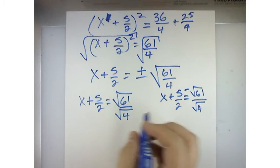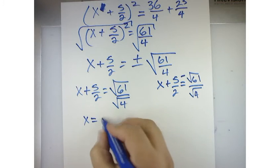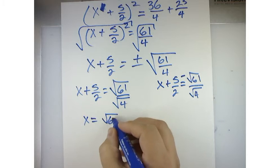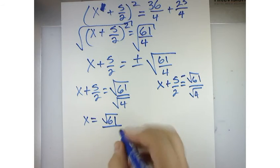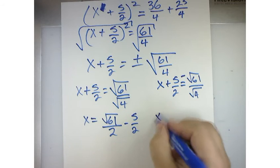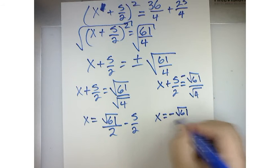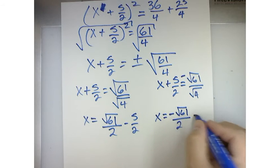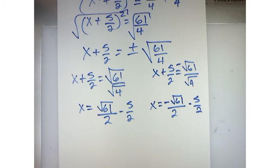So, now I'm going to subtract 5 over 2 from both sides. So, I get x is equal to the square root of 61 over 2 minus 5 over 2, or x is equal to negative square root of 61 over 2 minus 5 over 2.